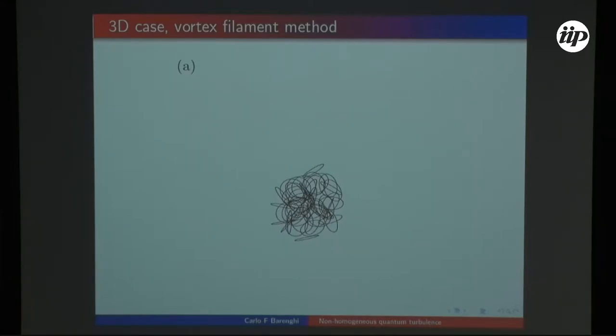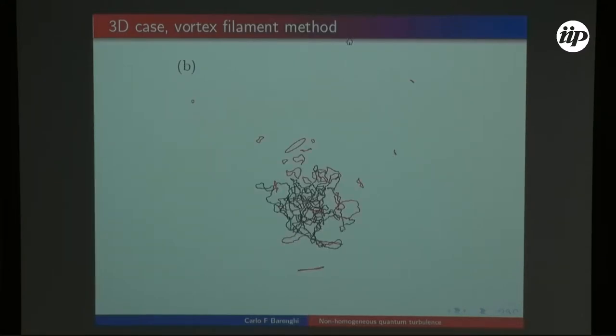You can also consider the same problem in three dimensions. Rather than vortex-antivortex pairs initially put randomly in the middle of your domain, we can distribute some vortex loops, vortex rings, inside some kind of spherical region. We can assign the same radius to everybody or provide a normal distribution of radii, randomize the solid angles to randomize the orientation, and consider what happens afterwards.